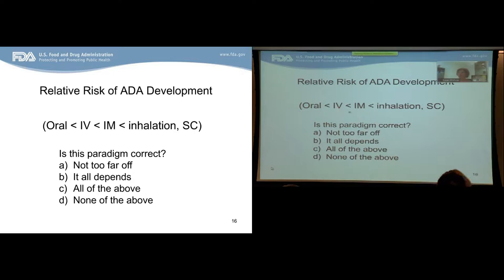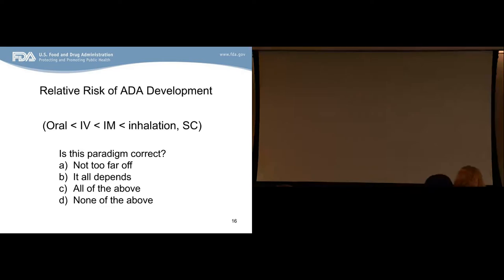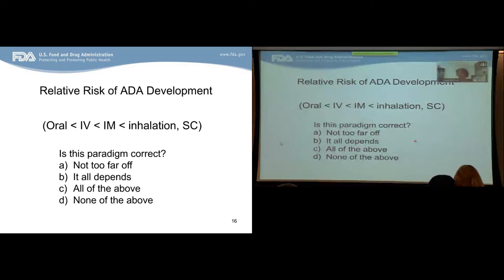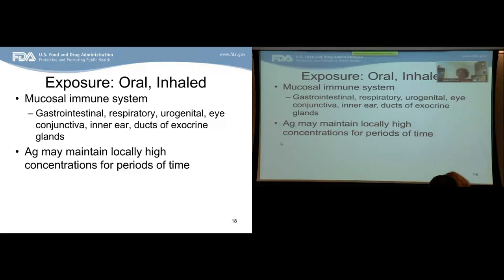It's long been a paradigm that oral administration of a therapeutic protein is less immunogenic than IV, which is less immunogenic than IM, which is less immunogenic than inhaled — with inhaled and subcutaneous being perhaps the most highly immunogenic routes and roughly equal. The question is: is this paradigm correct? The true answer is all of the above — it's not too far off, but it does depend on a variety of contextual parameters, which I'll illustrate with case studies.